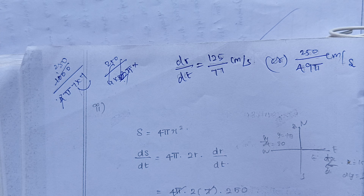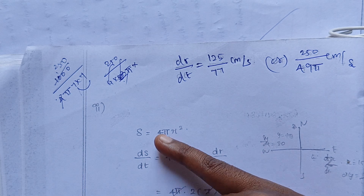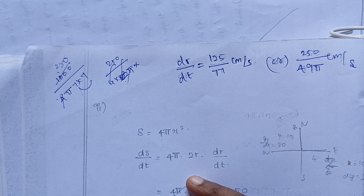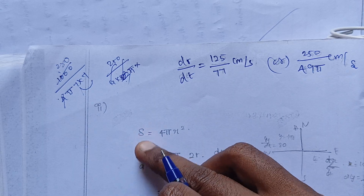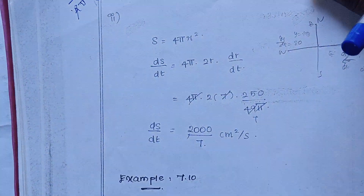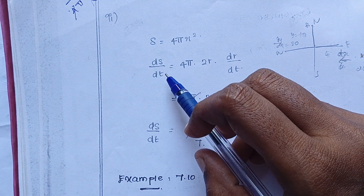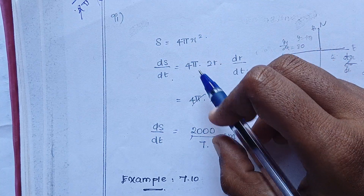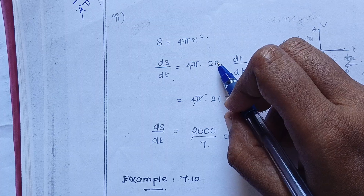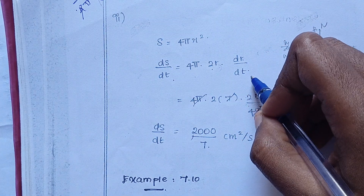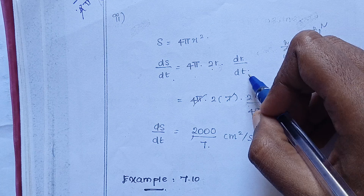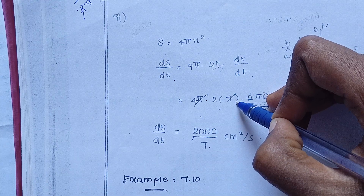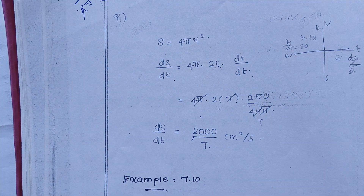Next question is surface area. The formula is S equals 4 pi r squared. We differentiate with respect to time. So dS by dt equals 4 pi times 2r times dr by dt, which gives dS by dt equals 8 pi r times dr by dt. Substituting r equals 7 and dr by dt equals 125 by 77.